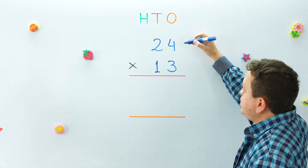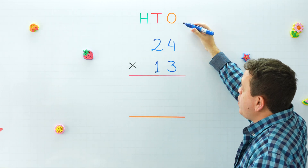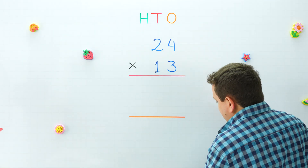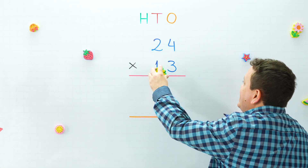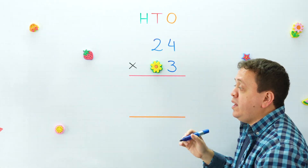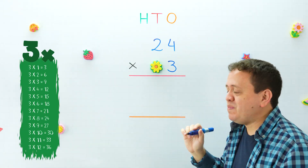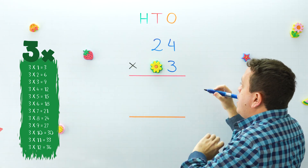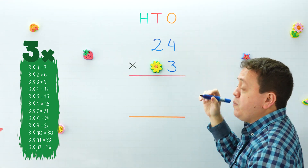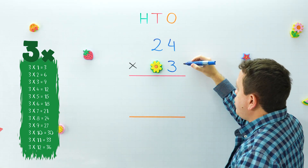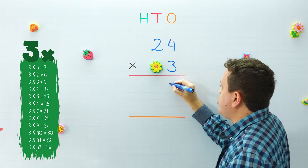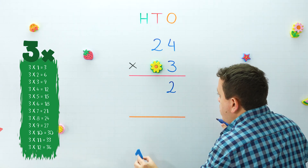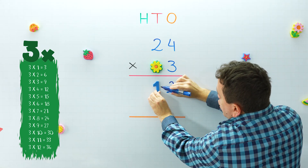Let's start with the first step. We're going to multiply 24 by three ones — we don't need the tens digit right now, I can cover it with this flower. We need the three times table. We start with three times four and then we move to the left. Three times four equals twelve — we're going to put the two over here.